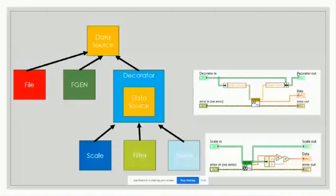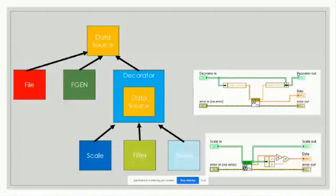That was all about the static class hierarchy at edit time. At runtime, you assemble the decorators: take the function generator as the inner component, wrap it with a scaling class and set parameters, then decorate it again with a low-pass filter, then again with normalize. The wire coming out of that last decorate step, when you call get data, returns data that has been scaled, filtered, and normalized.